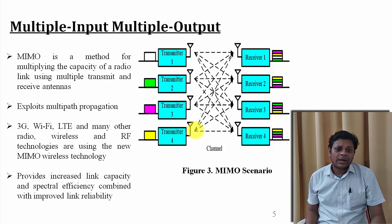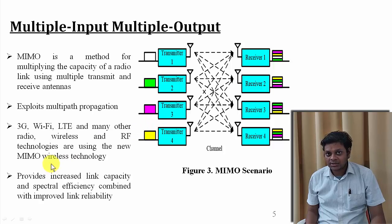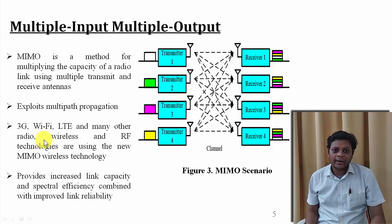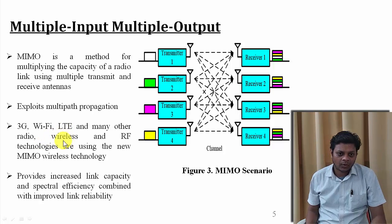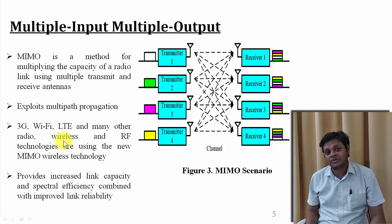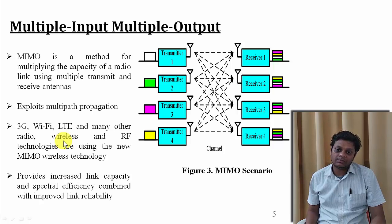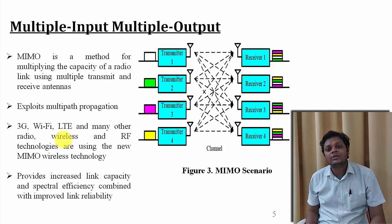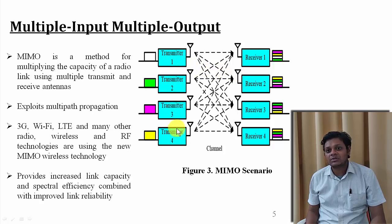So MIMO works on multipath propagation. Different technologies such as 3G, Wi-Fi, long term evolution, and many other wireless and RF technologies are using this MIMO wireless technology. It provides increased link capacity and spectral efficiency, combined with improved link reliability. In a MIMO scenario, different transmitters as well as different receivers are present, and one transmitter can connect to multiple receivers.